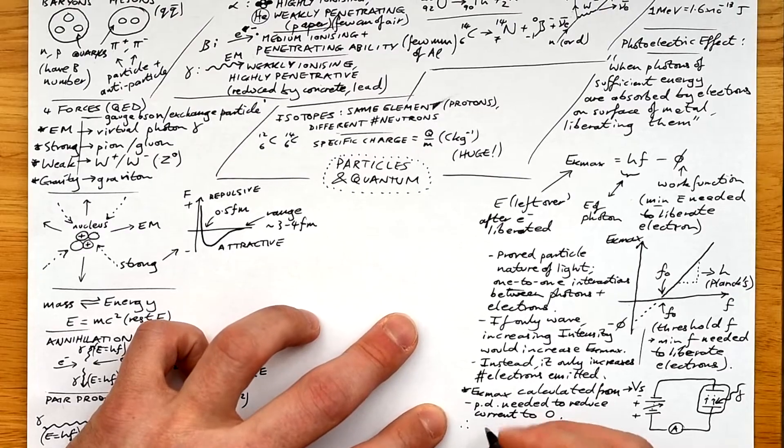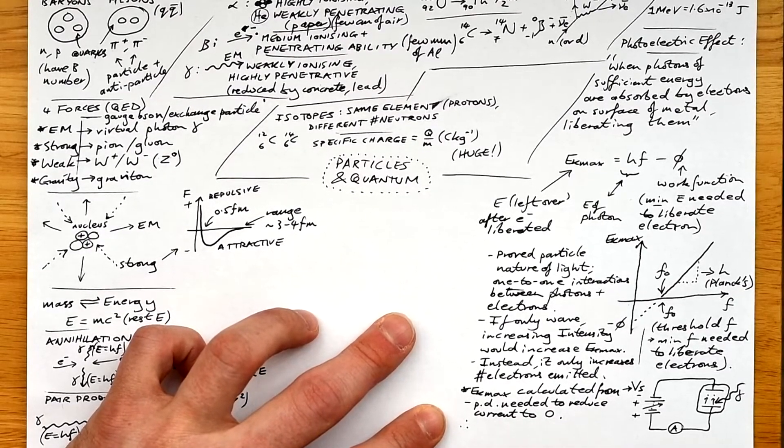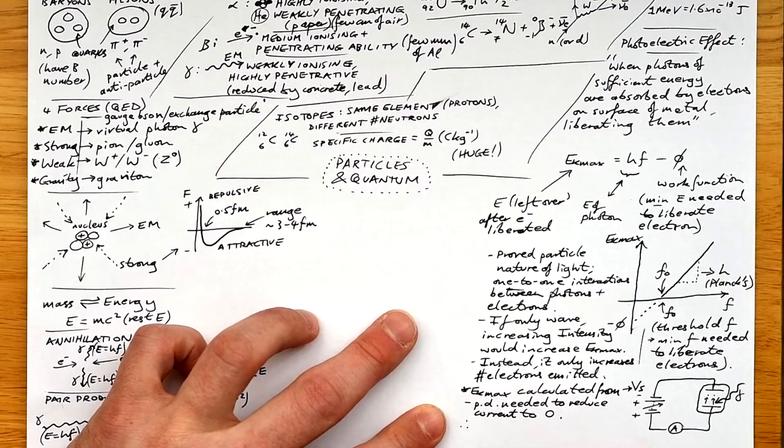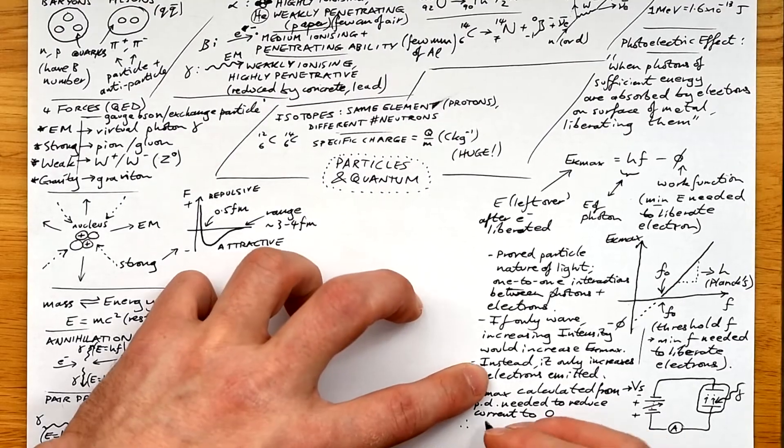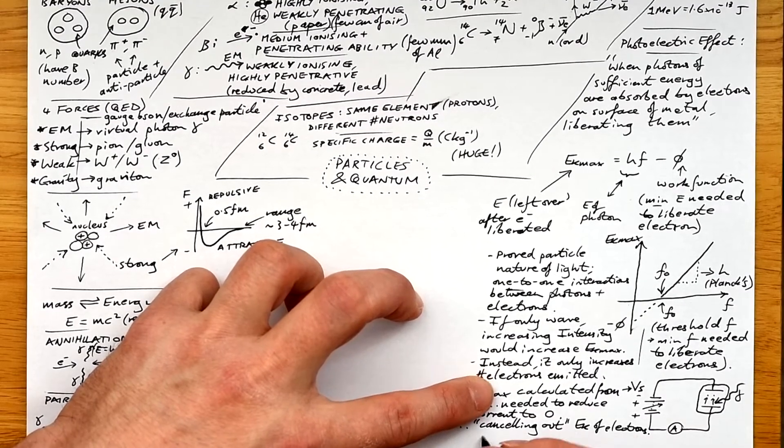and that will make electrons cross the gap and then they will flow around the circuit producing a current. What we do is increase the PD in the opposite direction, as it were, until the current goes to zero.